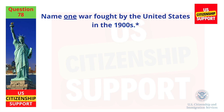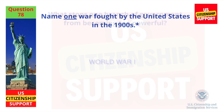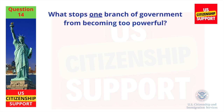Name one war fought by the United States in the 1900s. World War I. What stops one branch of government from becoming too powerful? Checks and balances.